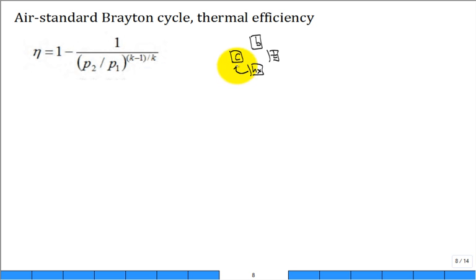This is state 1, state 2, state 3 and state 4. And we know what the pressures are: p2 is equal to p3, that's a critical observation, and p1 is equal to p4, that's a critical observation.